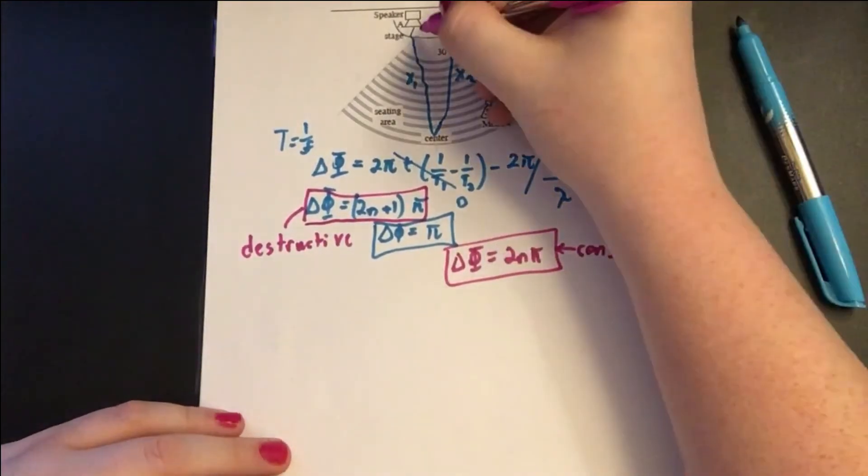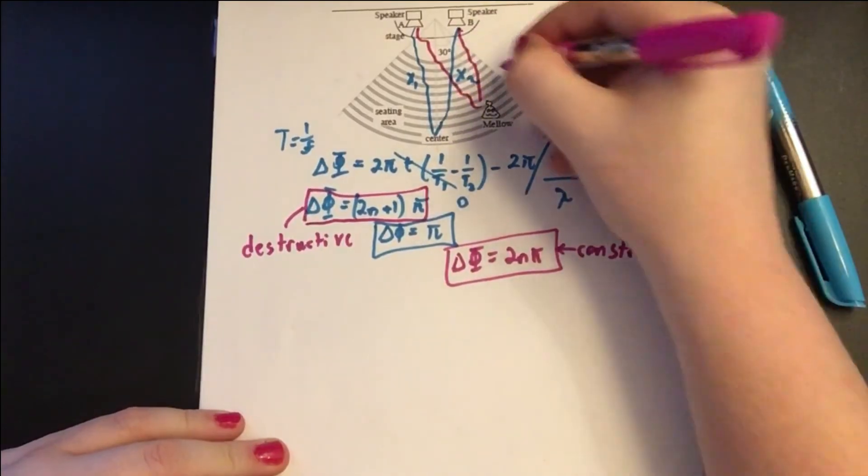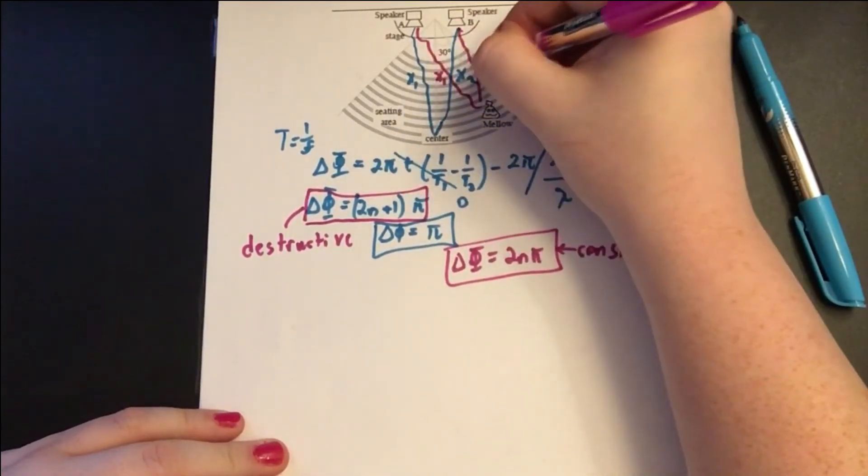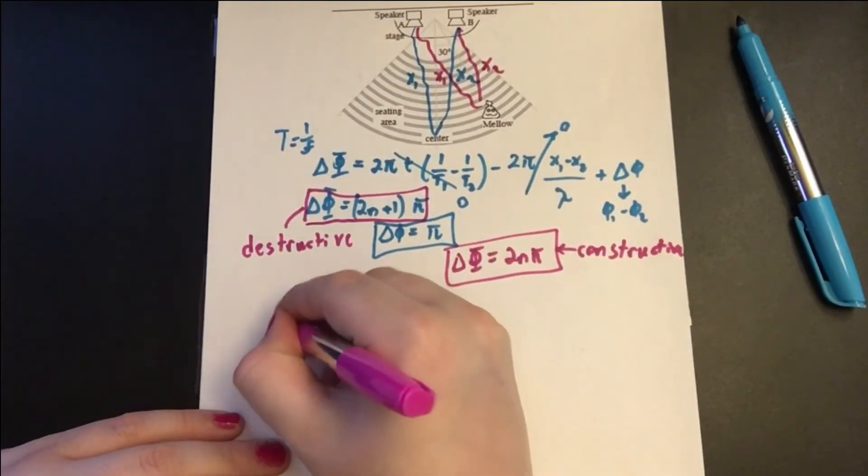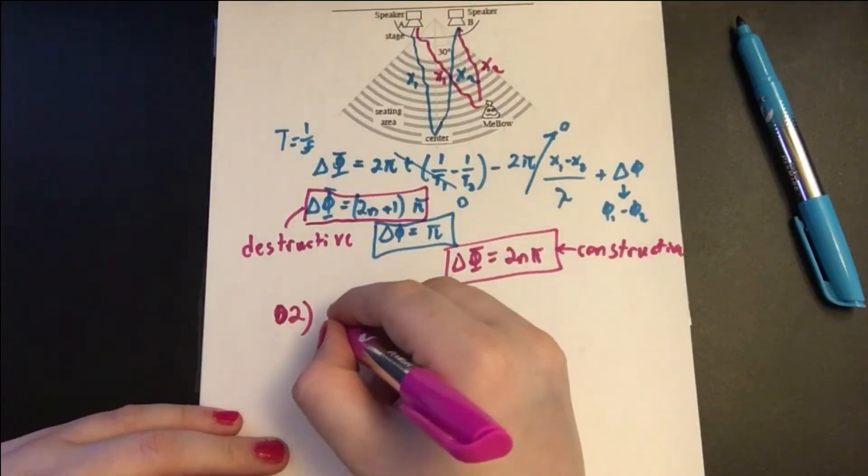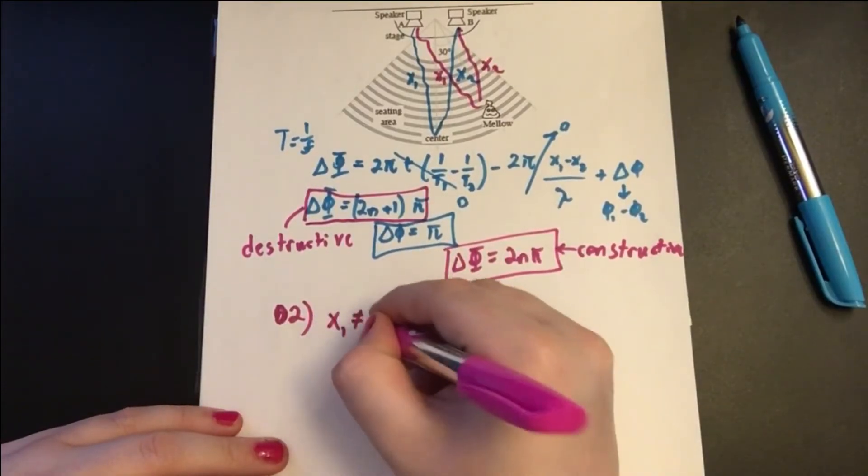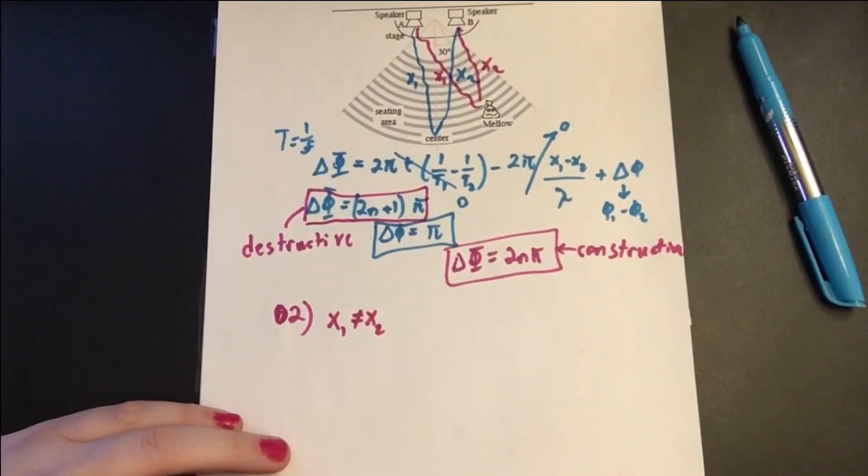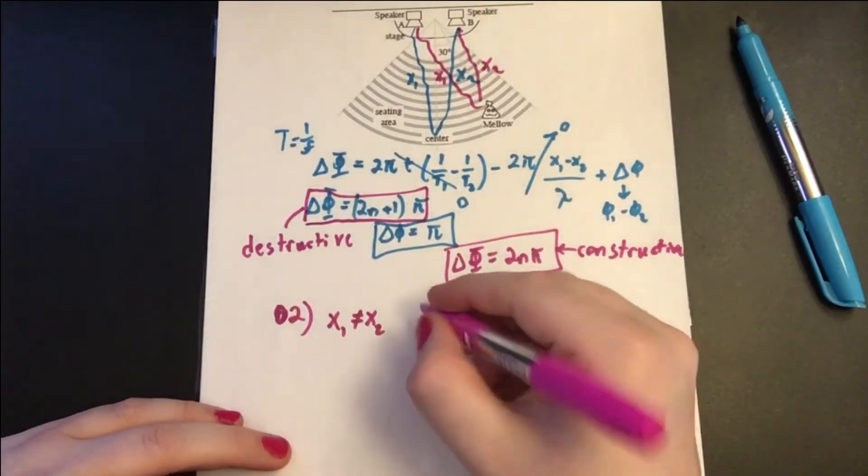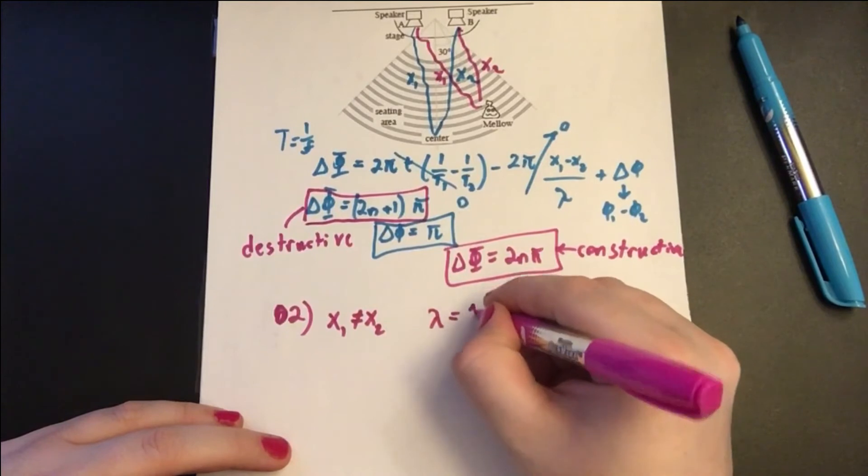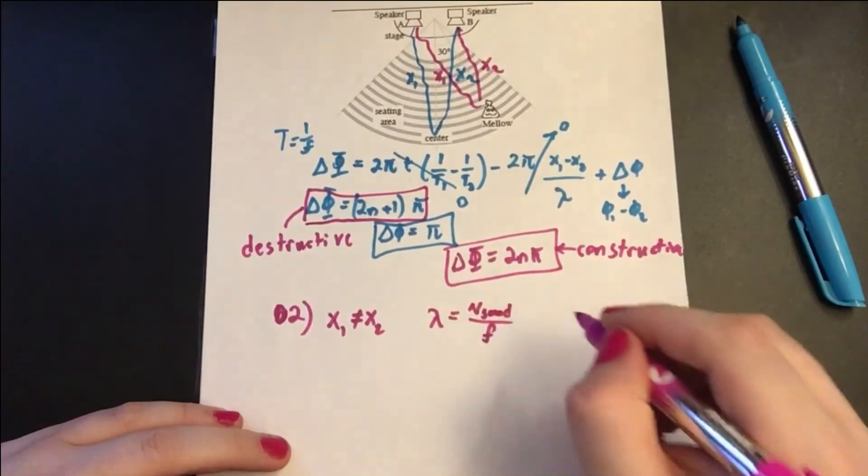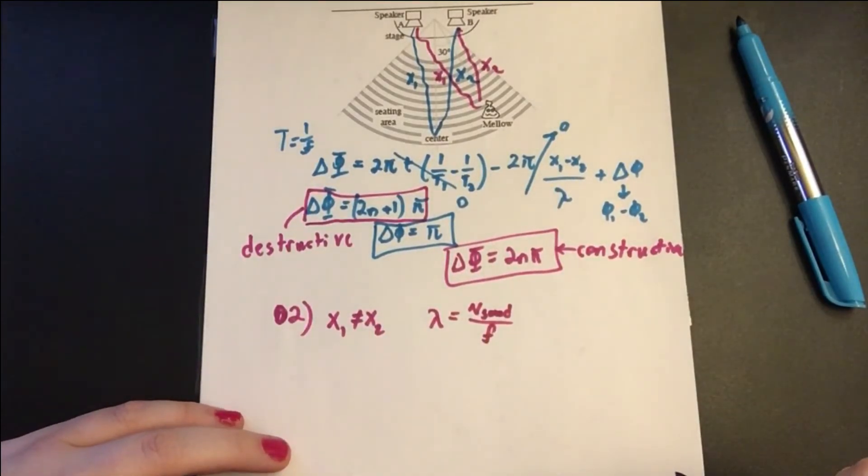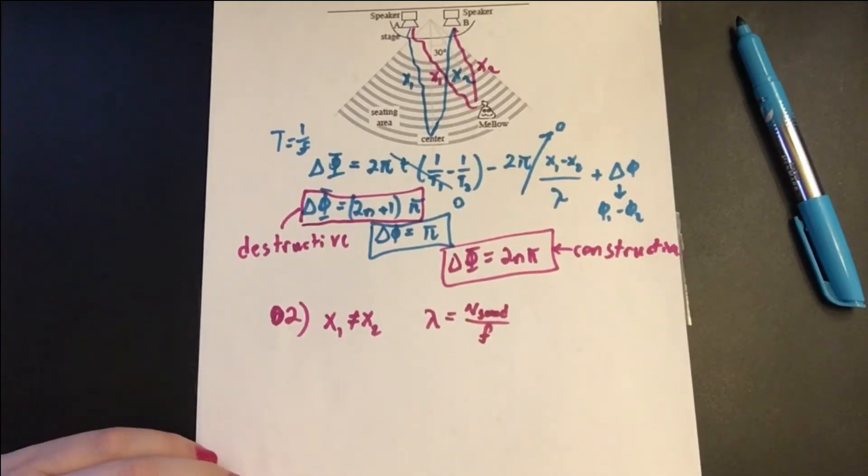Well, looking at Mello's position here, we know that x1 does not equal x2. So for part b, or for question two, x1 does not equal x2. So what do we know? We know the wavelength equals the velocity of the sound divided by the frequency. And they give us that the frequency is 250 hertz from each speaker.